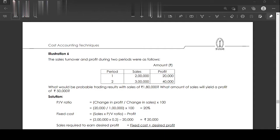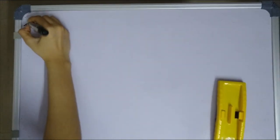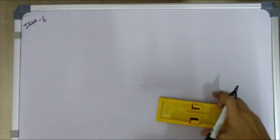So this is the question - illustration number six. Sales turnover, sales and profit for two years. Next question: what would be the probable trading results with sales of one lakh eighty thousand, and at what amount of sales will yield a profit of fifty thousand?